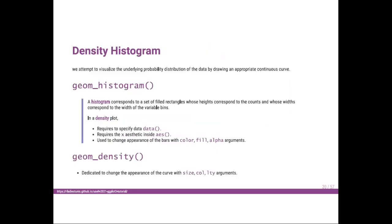Let's move to the density histogram. A density histogram is a tool used to visualize the underlying probability distribution of the data by drawing an appropriate continuous curve. In ggplot2, you use geom_histogram(). A histogram corresponds to a set of filled rectangles whose height corresponds to the count and whose width corresponds to the bin width. The density plot also requires specifying the data and the x aesthetic inside aes(), and it can be modified with color, fill, and alpha arguments.